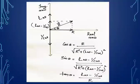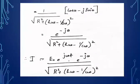Substituting these values into the equation, we get 1/√[R² + (ωL − 1/ωC)²] multiplied by (cos θ − j sin θ). Since cos θ − j sin θ = e^(−jθ), this becomes e^(−jθ)/√[R² + (ωL − 1/ωC)²].